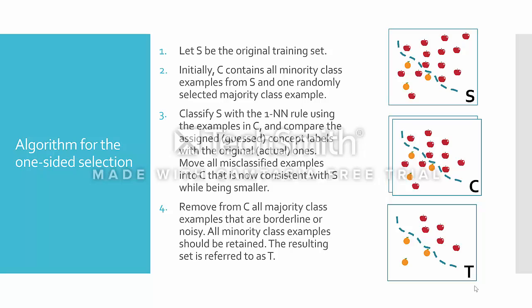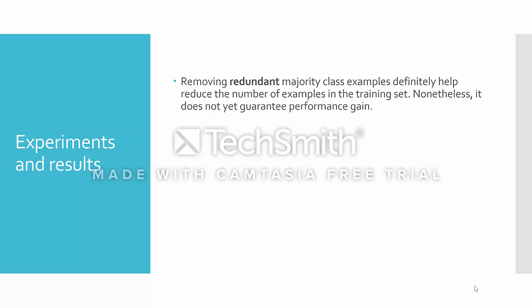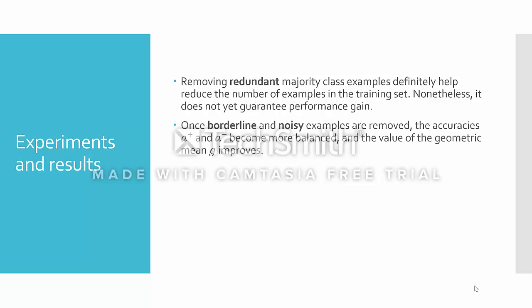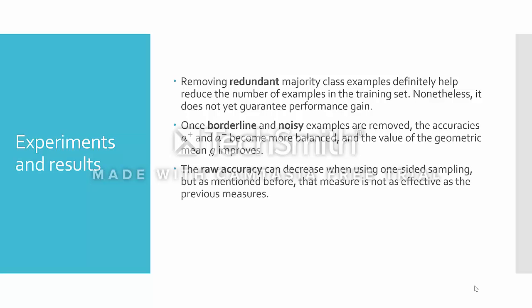Finally, remove all majority class examples that are borderline or noisy while retaining all minority examples. This resulting set is the new, respectively balanced set. Regarding experimental results, removing redundant majority class examples definitely helps reduce the number of examples in the training set to a more balanced set, though it does not always guarantee performance gain. On the other hand, removing borderline and noisy examples balances the separate accuracy for both classes in addition to improving the geometric mean. Moreover, when using one-sided sampling, raw accuracy can decrease, but as mentioned before, raw accuracy is not as effective a measure as the other measures mentioned.